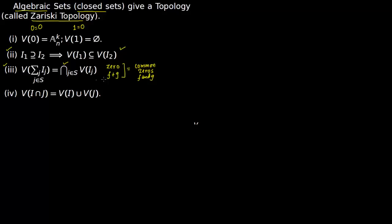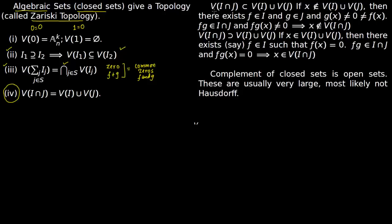The only thing we need to prove is statement 4: the vanishing set of two ideals I and J equals the vanishing set of I union the vanishing set of J. First we prove that V(I ∩ J) is a subset of V(I) ∪ V(J). We are going to prove this by contrapositive: if X does not lie in V(I) ∪ V(J), then X does not lie in V(I ∩ J).